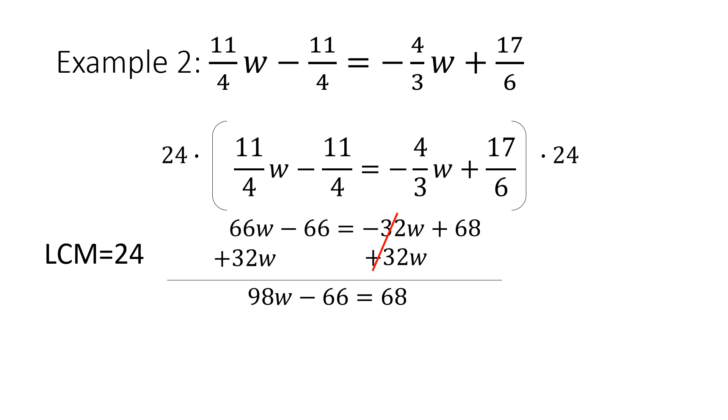I need to move the -66 by adding it to both sides. The 66 is going to cancel, leaving me with 98W = 134.